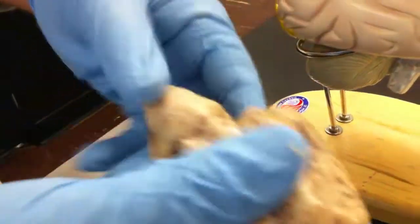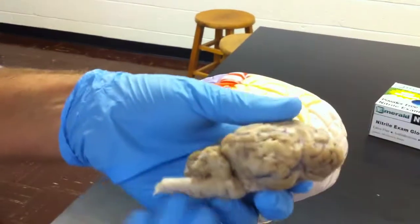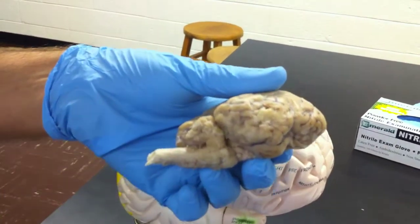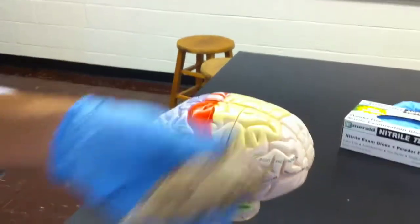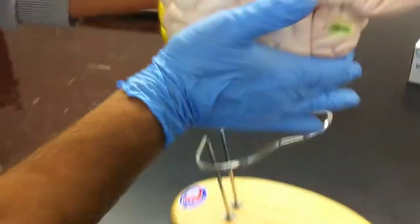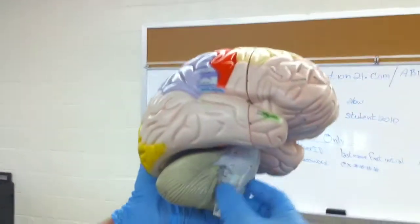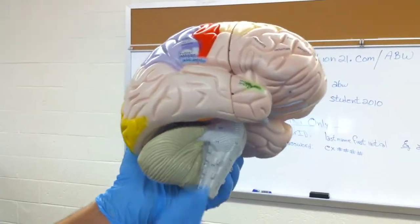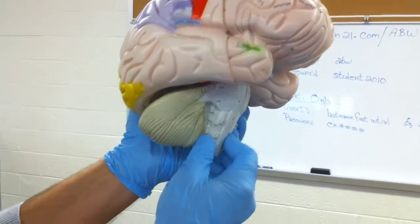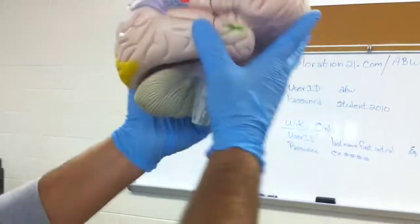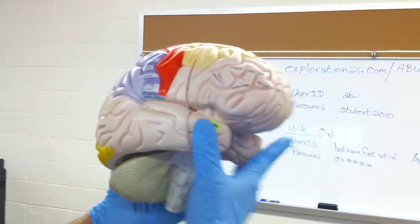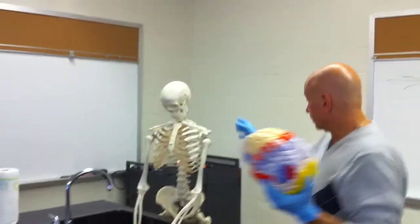The other thing to take a look at is how in the sheep, the brain stem comes directly back from the brain and would continue on to the spinal cord column. Whereas if we look at the human brain, you can see that the brain stem and then the spinal cord is going to come and be directly below us because we walk on two feet.